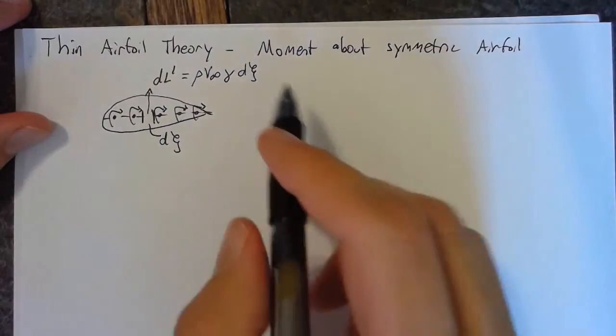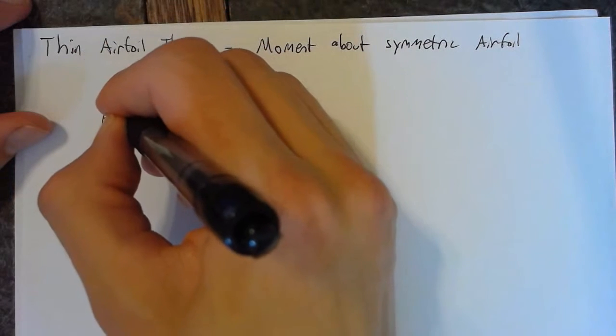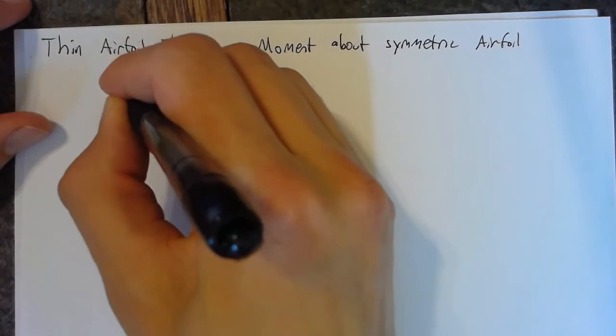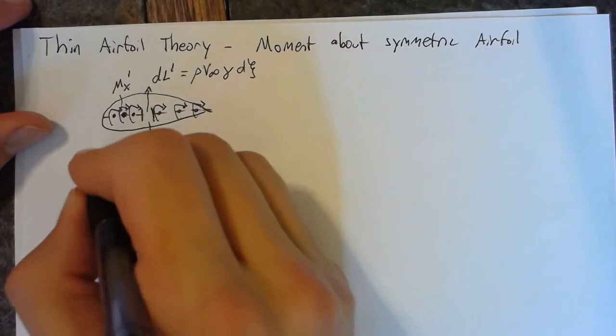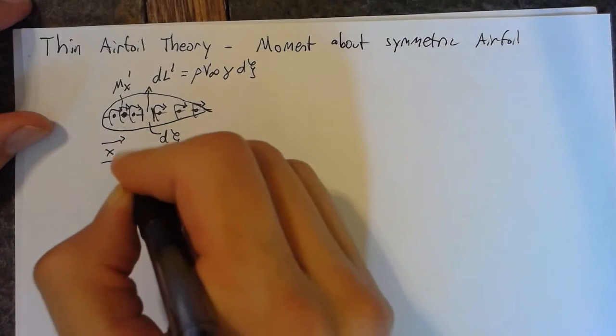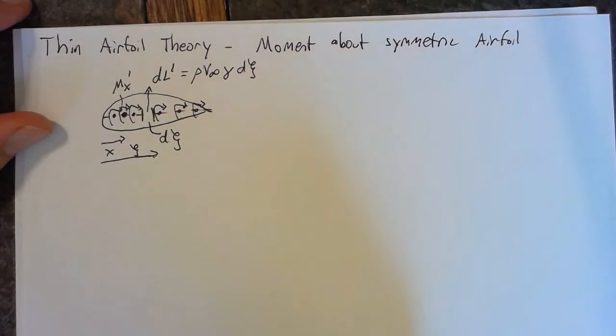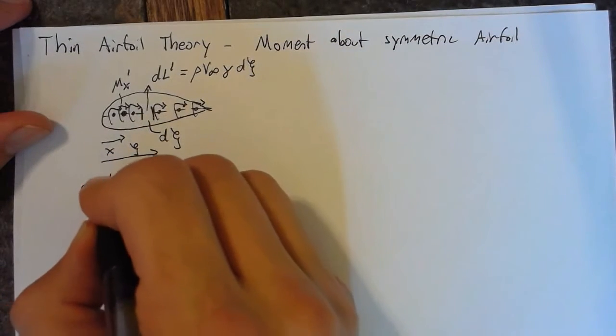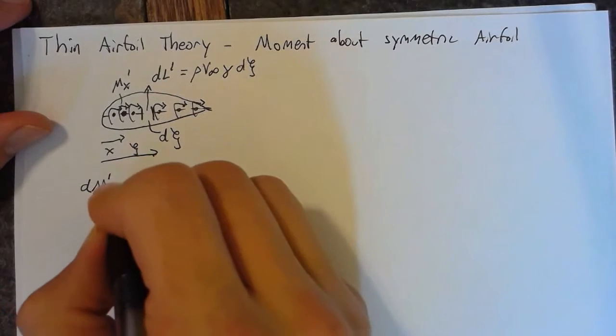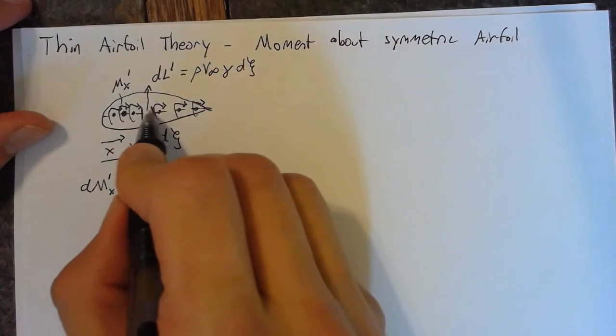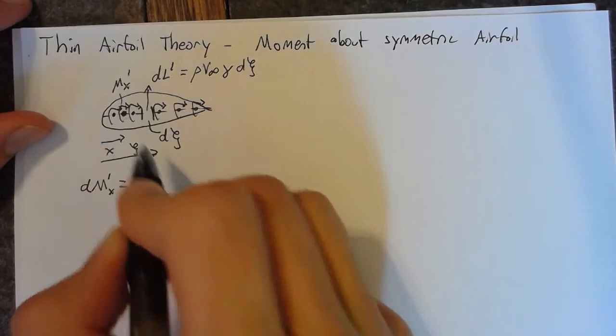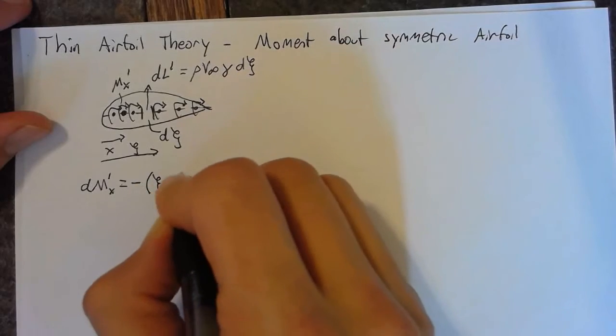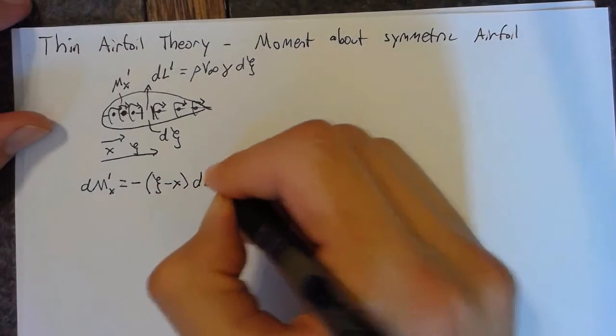Since we're interested in moment, we can calculate the moment about some point x. So this is our moment about x. This will be our distance x, and this will be our distance ξ. The portion of the moment caused by this differential lift, dM about x, is going to be negative, noticing that this is in the opposite direction of our moment. It's negative (ξ - x), this is our moment arm, times dL'.